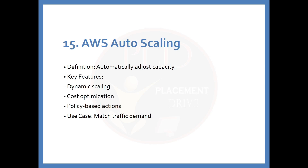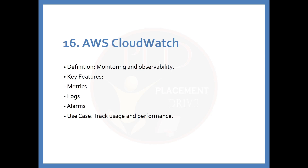The 15th service is AWS Auto Scaling. The definition is: automatically adjust capacity. Key features include dynamic scaling, cost optimization, and policy-based actions. The use case is matching traffic demand. The 16th service is AWS CloudWatch. The definition is: monitoring and observability. Key features include metrics, logs, and alarms. The use case is tracking usage and performance.